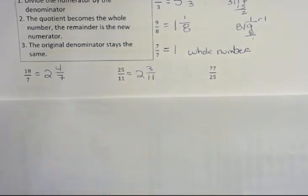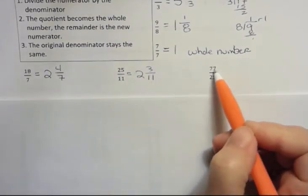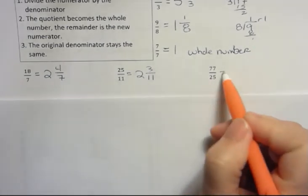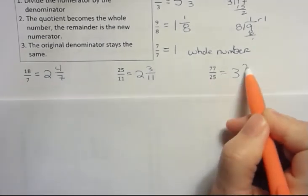11 goes into 25 twice with 3 left over. Notice the denominator always is the same. 25 goes into 77 three times with 2 left over.